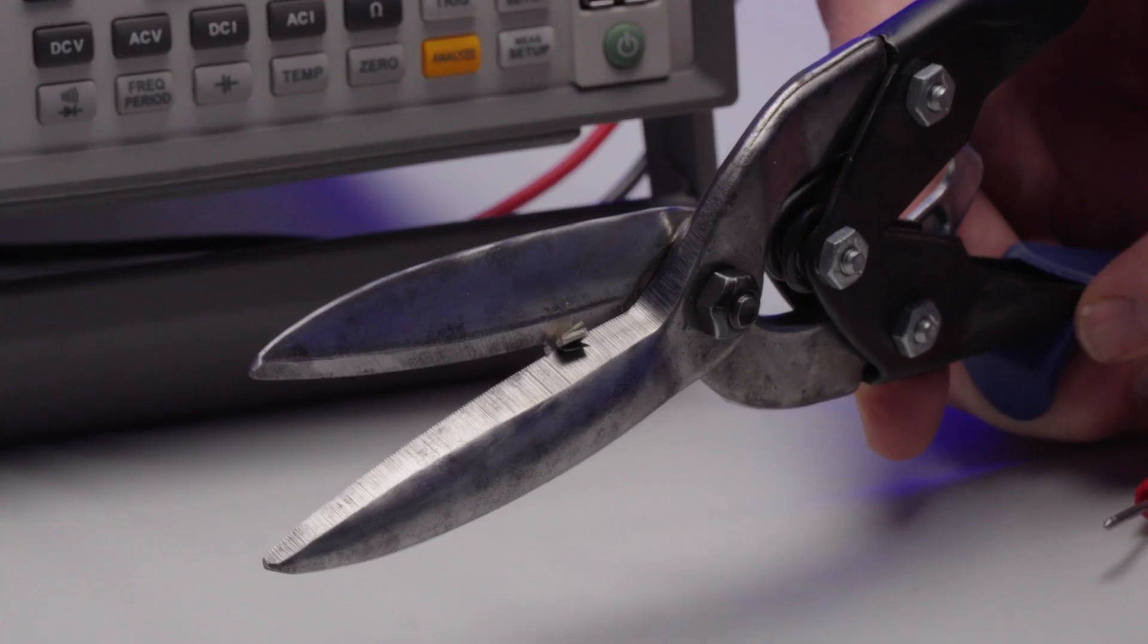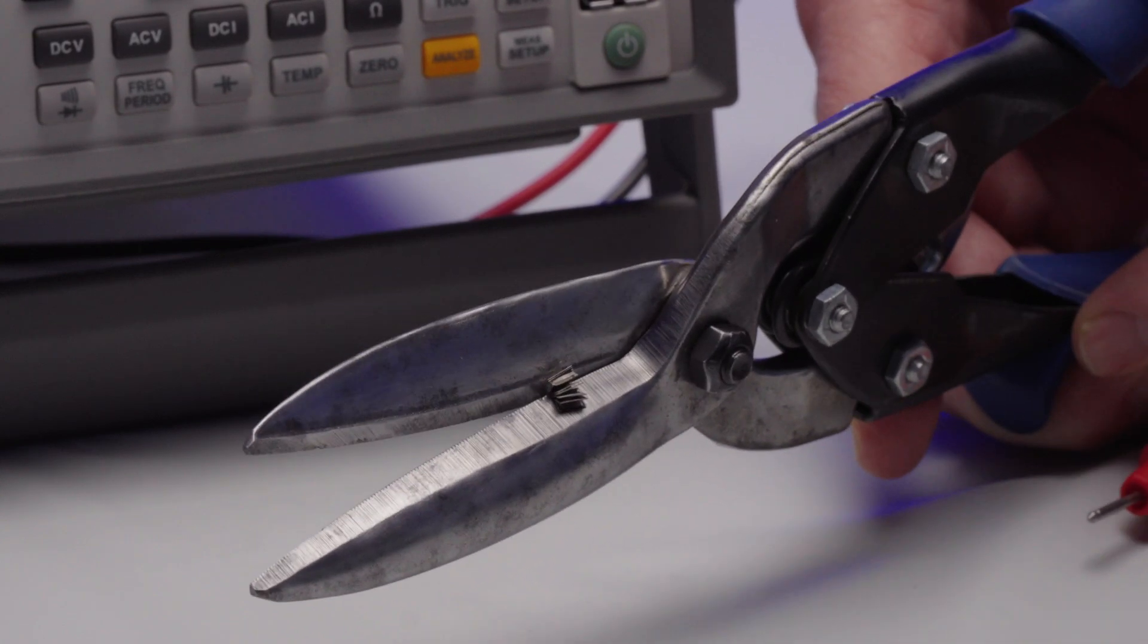The second method will involve destructively cutting a stacked battery in the charged state with shears, with the absence of smoke, flames, or outgassing.